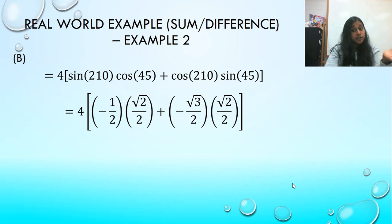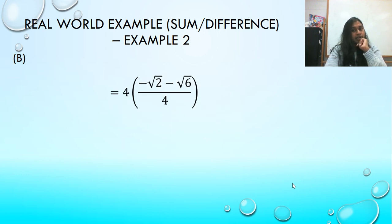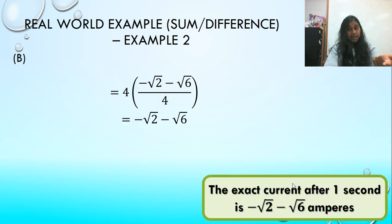Again, multiply and add your fractions correctly here. Otherwise, you make a mistake. So I do multiplication first. Now I have a least common denominator, and I put those buddies together. Look what happens to those fours. Nice and easy. They disappear. And that is my end answer. Because it's a word problem, I rewrite it in sentence form. The exact current after one second is negative square root of 2 minus the square root of 6 amperes. Then you're done.